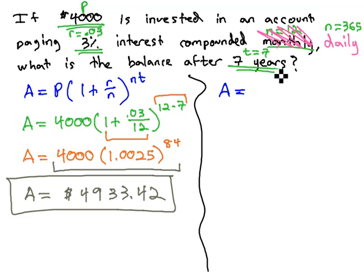Same formula, A equals P times 1 plus r over n to the nt. Same numbers, we've just changed the amount of compounds.